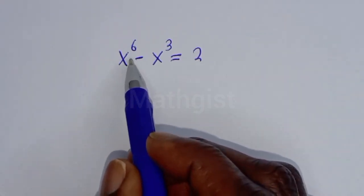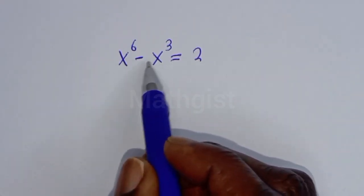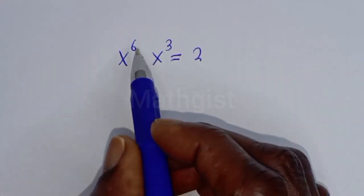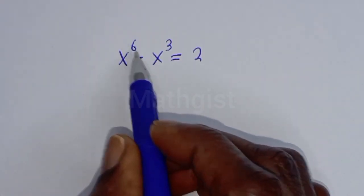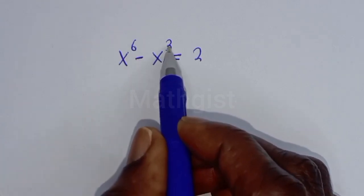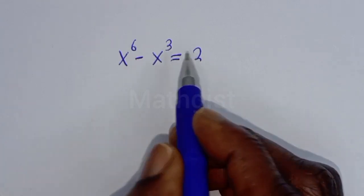How to solve for s from this given math Olympiad algebra problem? s raised to power 6 minus s raised to power 3 is equal to 2.